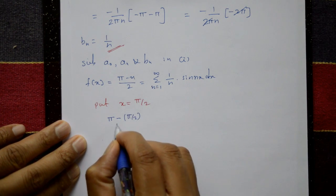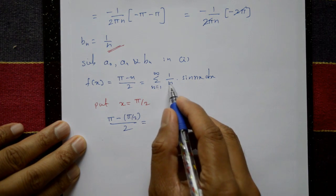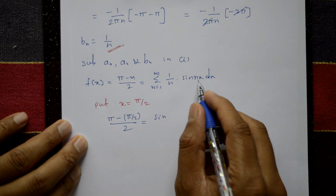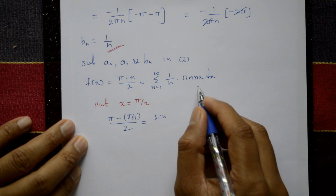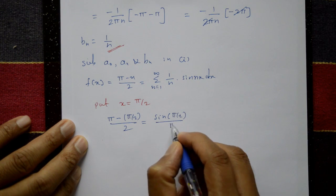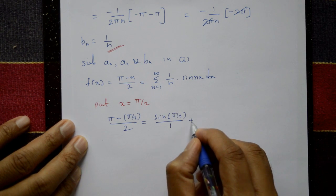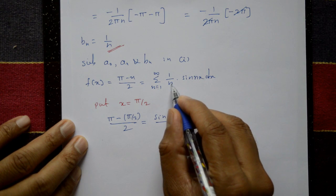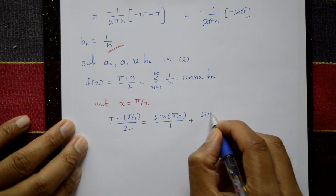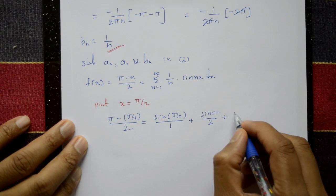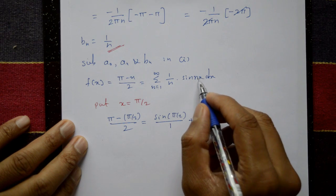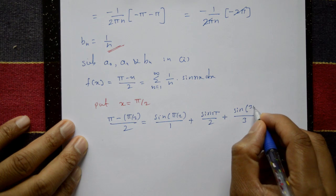Substituting x = π/2: left side becomes (π - π/2)/2 = π/4. Right side: put n = 1: (1/1)sin(π/2); put n = 2: (1/2)sin(π); put n = 3: (1/3)sin(3π/2); put n = 4: (1/4)sin(2π); put n = 5: (1/5)sin(5π/2); and so on.